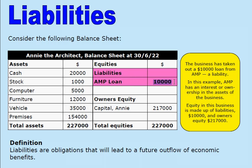In this example, AMP has an interest or ownership in the assets of the business. So equity, in this particular example on this particular date, is made up of liabilities of $10,000 — that's the equity held by AMP — and the remainder, $217,000, is held by the owner, Annie. Owner's equity is $217,000, but there is also an external equity, or an obligation to an outsider, in this case AMP.